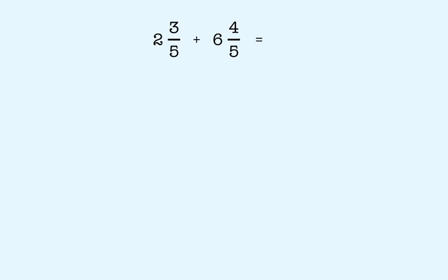So to solve this problem, let's first convert the two numbers into improper fractions. 2 and 3 fifths becomes 13 fifths, and 6 and 4 fifths becomes 34 fifths. Now just add the two fractions together. 13 fifths plus 34 fifths is equal to 47 fifths.